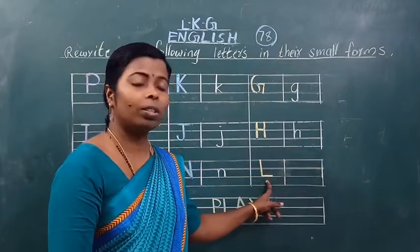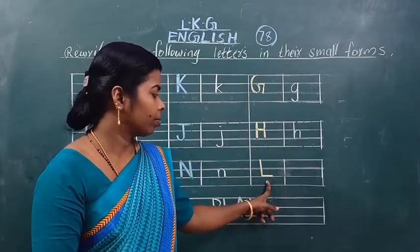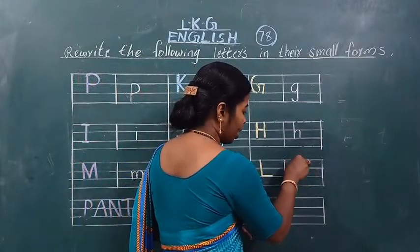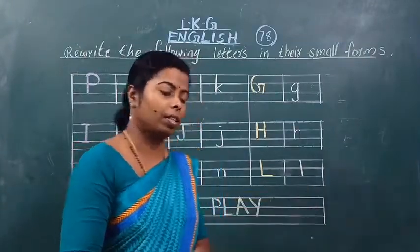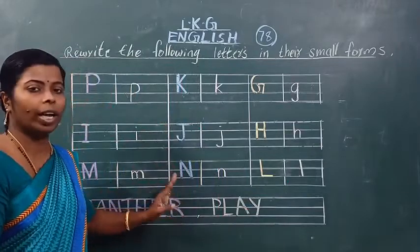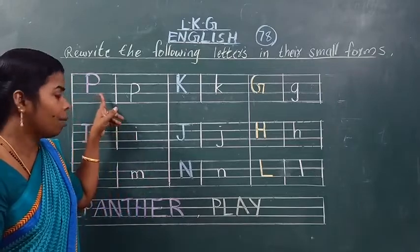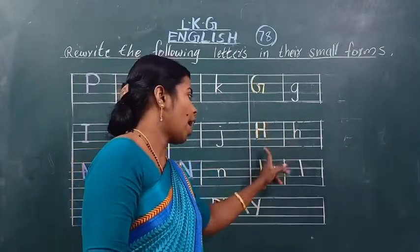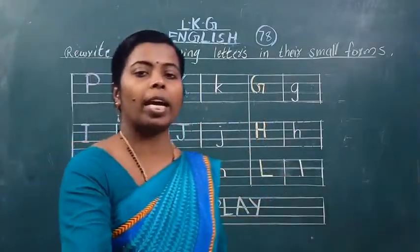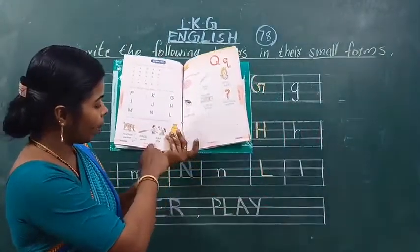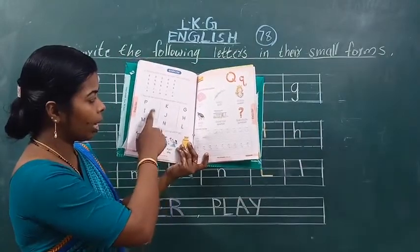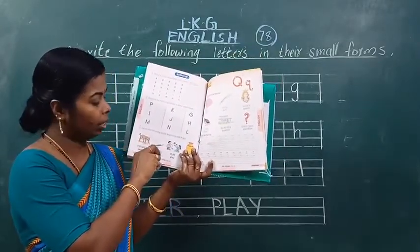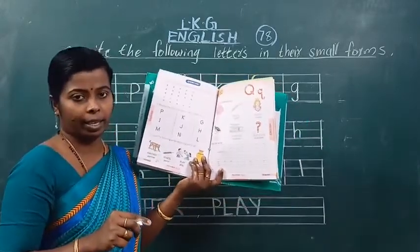And — बोलो, which letter is this? Which letter is this? This is capital letter L. आमको इधर क्या लिखना? Small letter L लिखना है। आपको यह बेडी बुक में complete करना। Now we will read together — बोलो सब, आपको भी read करना: P, I, M, K, J, N, G, H, L. Okay students, समझ में आया? आपको इधर fill करना है — page number 10 में capital letter दिया हुआ है, इधर small letter लिखके आपको fill करना, complete करना। This is today's homework।